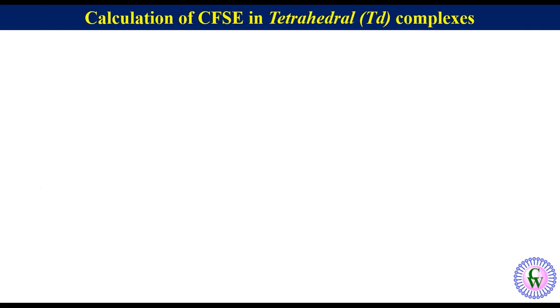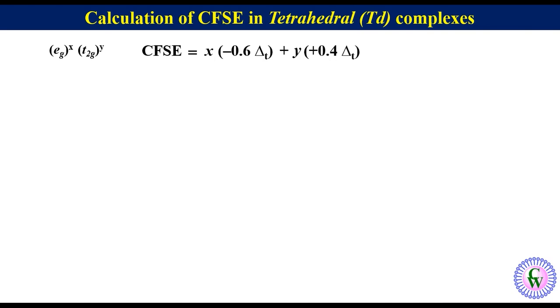Crystal field stabilization energy of a complex, abbreviated as CFSE, is the sum of energies of all the D electrons in a metal ion. For the metal ion in a tetrahedral complex with the electronic configuration eg^x t2g^y, CFSE will be x into minus 0.6 delta-t plus y into 0.4 delta-t, where x is the number of electrons in eg orbitals and y is the number of electrons in t2g orbitals.